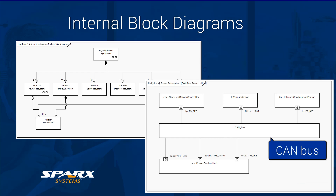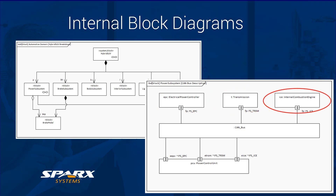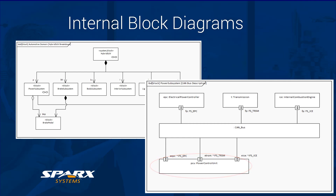For this, we have a core component — the controller area network, or CAN — which includes connectivity via ports for the electrical power controller, the transmission, the internal combustion engine, and a power control unit, all providing network interactions between these.